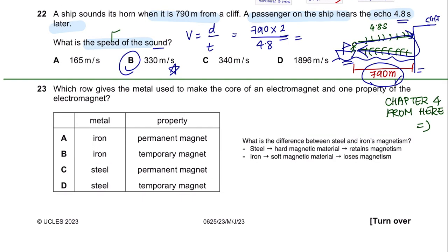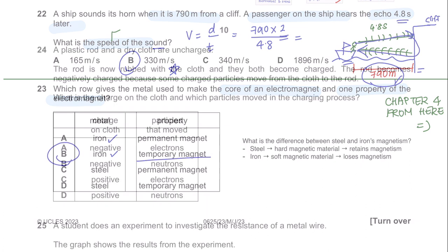Question 23. Which row gives the metal used to make the core of an electromagnet and one property of the electromagnet? Remember that electromagnets are made from temporary magnets, and temporary magnets are made of iron. So the answer is B.